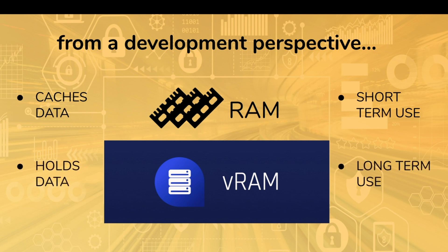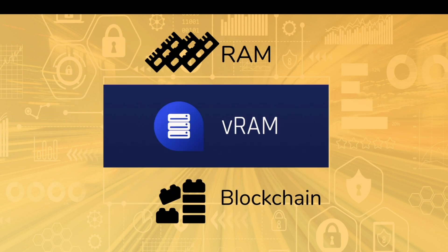That might sound more centralized — we'll get to that in a moment, because it's not. But from a development perspective, VRAM is like the hard disk. It holds the data at cheap storage for long-term use. And whenever you need that data — say a user logs in, or a game begins or continues — the data is warmed up into RAM for fast use.